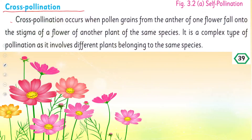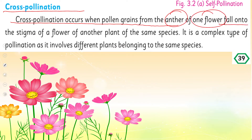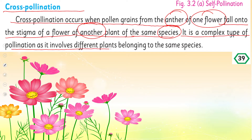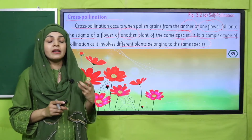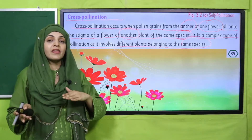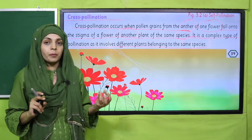Cross-pollination occurs when pollen grains from the anther of one flower fall onto the stigma of a flower of another plant. The other plant must be of the same species — for example, it can be pollinated with another rose, but not with a different species. It is a complex type of pollination and involves different plants belonging to the same species. We call it cross-pollination because there is an external source, such as insects, involved.